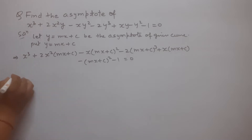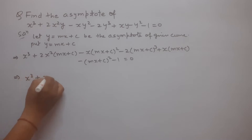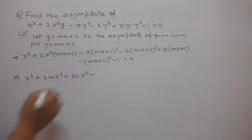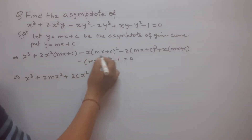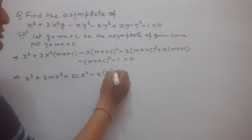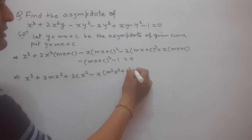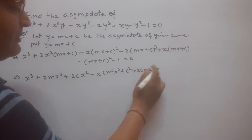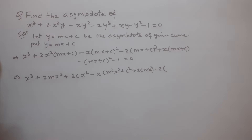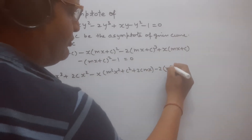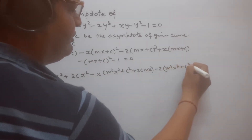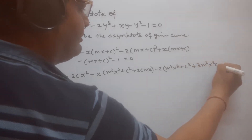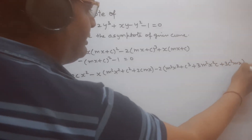Now we solve this equation. We get x² + 2m² + 2c·x². We use the (a + b)² formula, so we get m²x² + c² + 2cmx. And we use the (a + b)³ formula, that is m³x³ + c³ + 3m²x²c + 3c²mx.